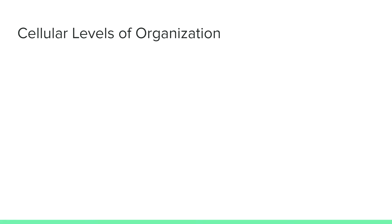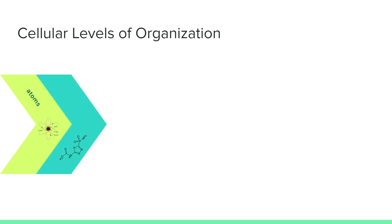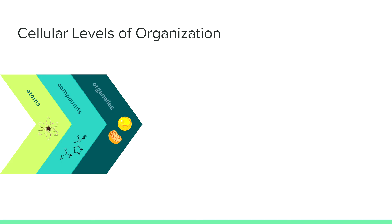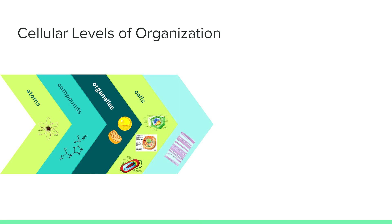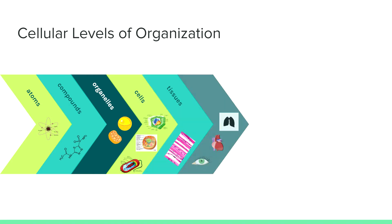Before we dive into the levels of organization larger than one individual, let's review those levels smaller than an individual. Atoms, which are the smallest unit of matter, make up compounds like water and lipids. A bunch of compounds make up organelles like the nucleus or mitochondria. A bunch of organelles combine to create cells. A bunch of cells together can make tissue like muscle. And a bunch of tissue make up an organ such as the heart, eyes, and lungs.